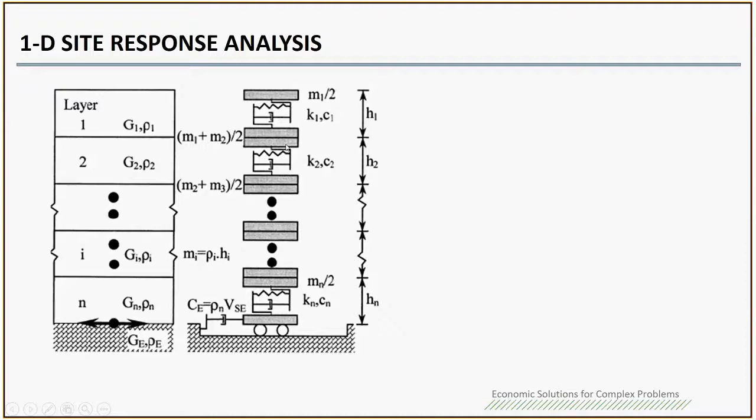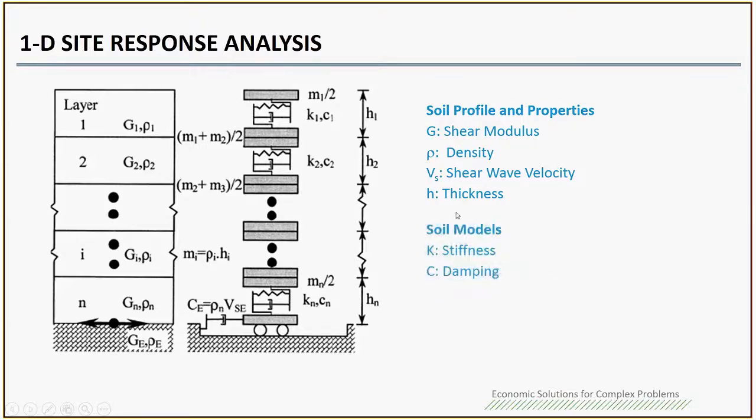Ninety percent of seismic waves are S-waves, so 1-D site response analysis only looks at the shear response of soil. We only have the shear modulus G1 to Gn. At the same time, you need the soil density. That's the soil profile and properties. You also need the thickness of each layer.